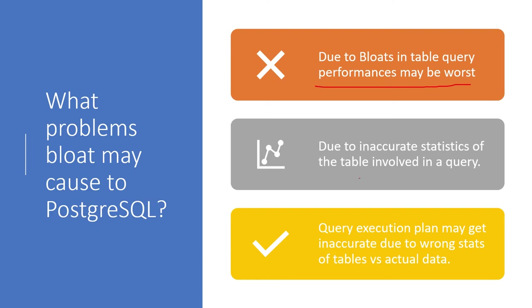When bloating is there in a particular table - let's say there are 1,000 records and due to bloating this has become 2,000 or 3,000 because those dead tuples are not removed - it leads to inaccurate statistics of the table. When the query having that particular table is executed, it gives the wrong statistics: instead of the actual 1,000 rows, it sees more than 3,000 rows and has to traverse those, giving inaccurate statistics.